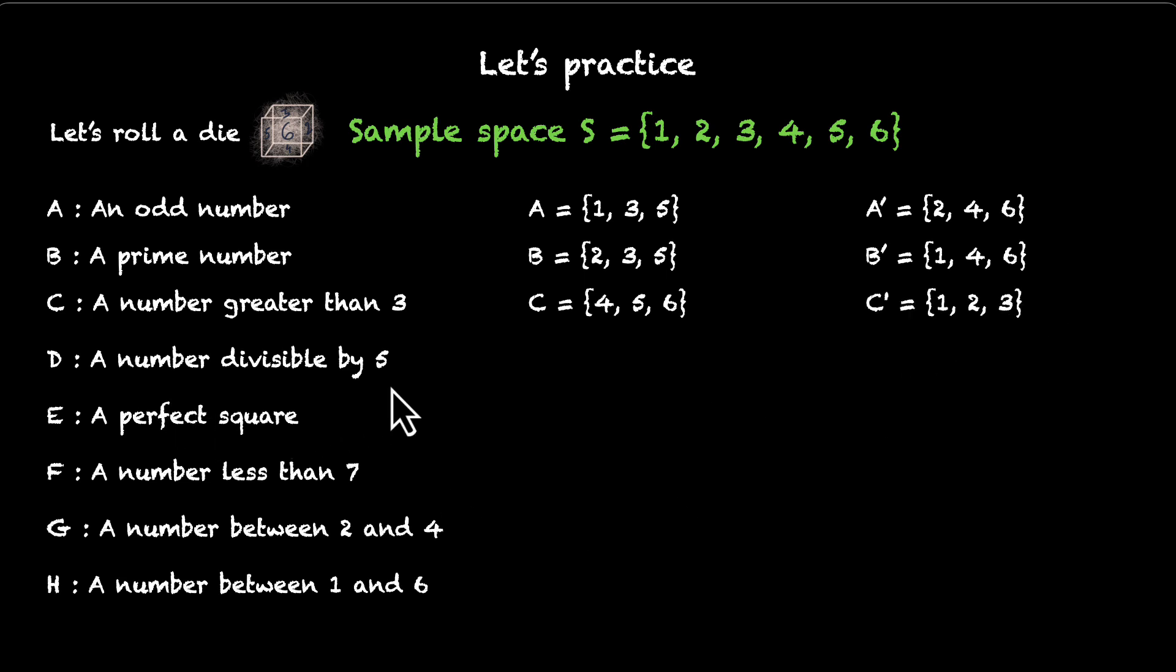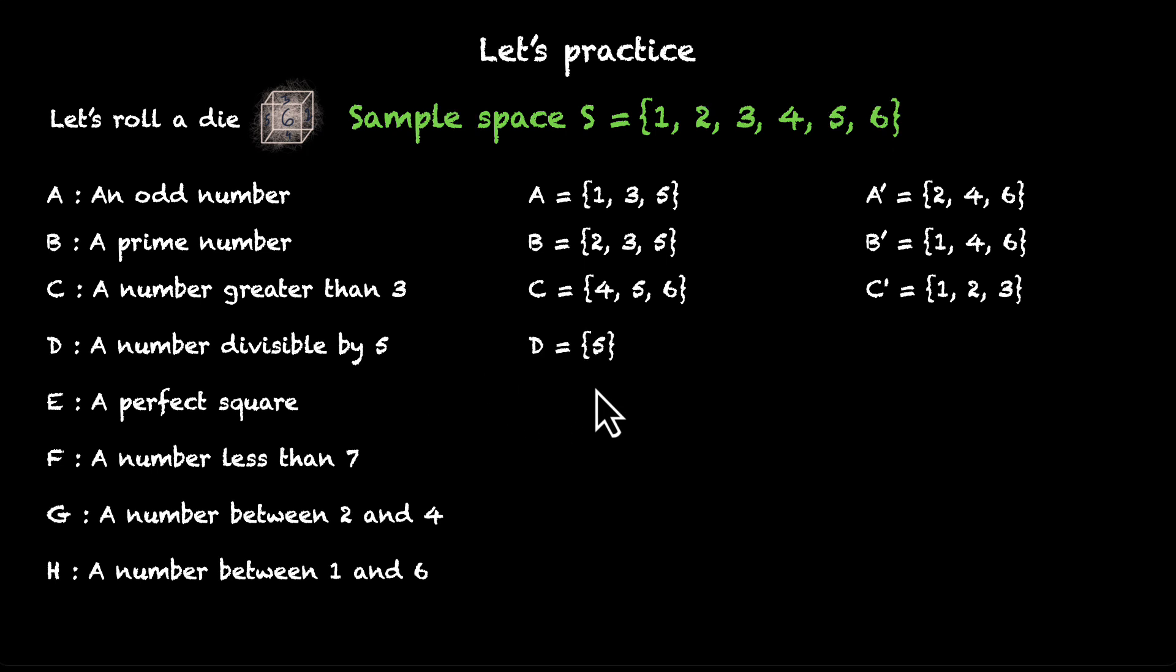A number divisible by 5. So, this will only have 5. Its complement will have 1, 2, 3, 4, and 6. A perfect square. Well, perfect squares are 1 and 4. So, we have 1 and 4 as the event E. E dash will have 2, 3, 5, and 6.